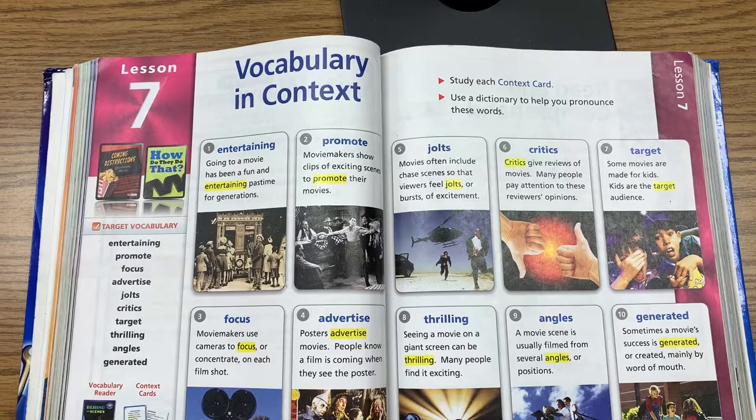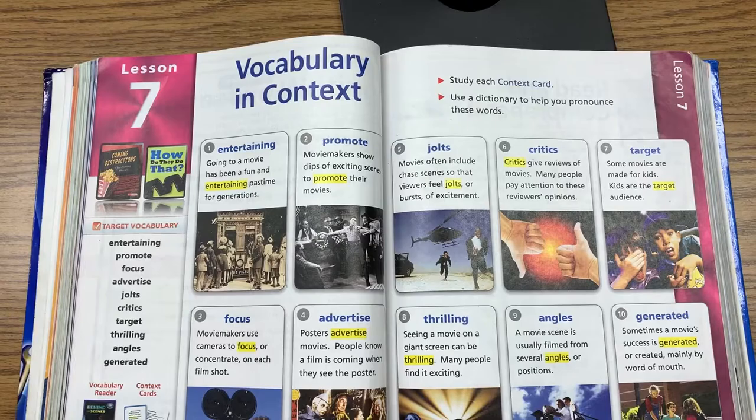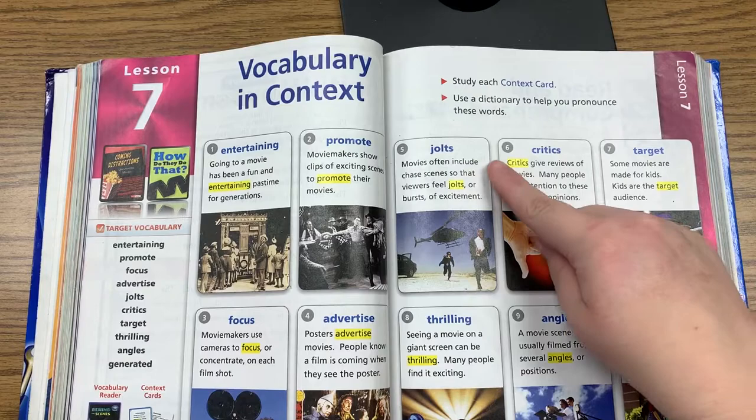Number four, advertise. 'Posters advertise movies — people know a film is coming when they see the poster.' Here you have a poster for Wizard of Oz. A lot of times you'll see advertisements like posters and commercials, and those are trying to promote you to go see their movie.